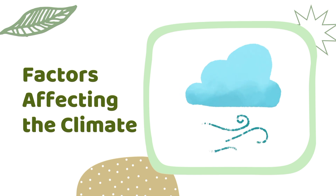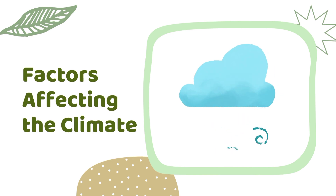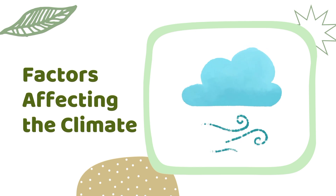Climate has several factors that may affect it. The first factor is latitude. Latitude is the distance north and south from the equator. It is an imaginary line that is parallel to the equator. Latitude determines the variety of climatic zones on Earth.